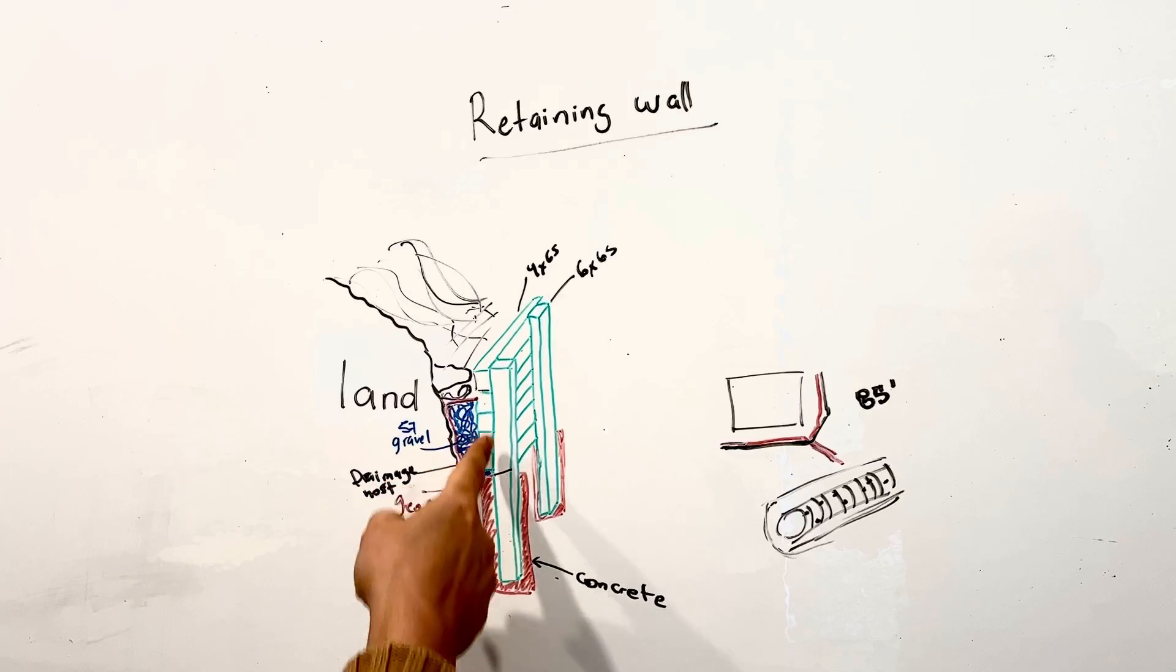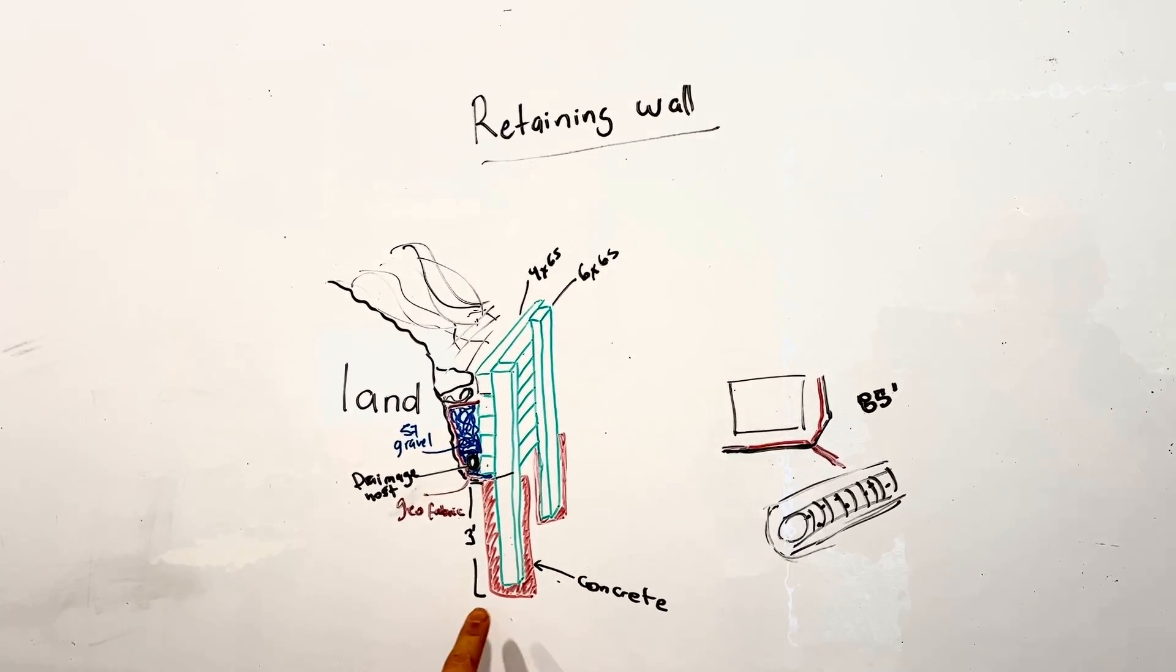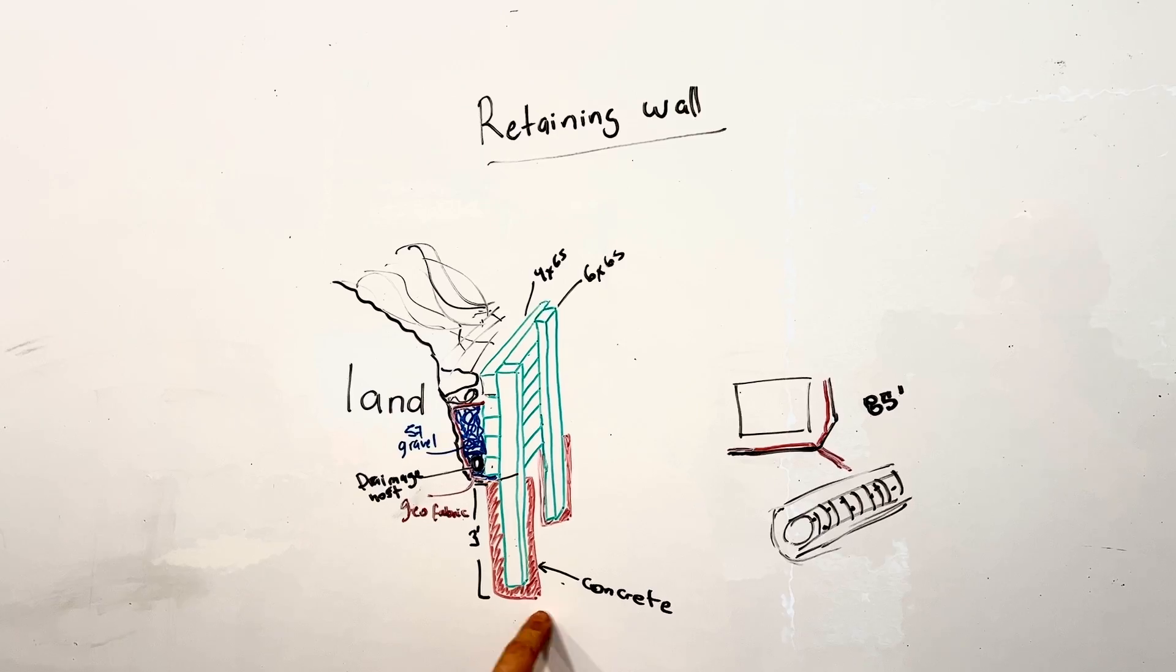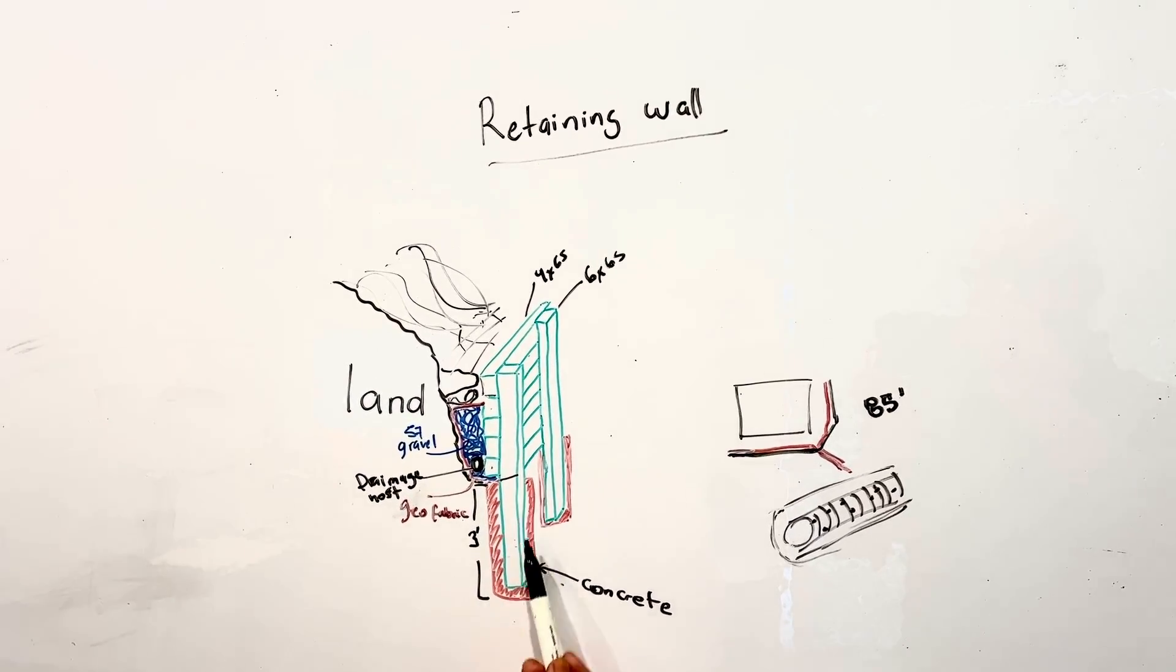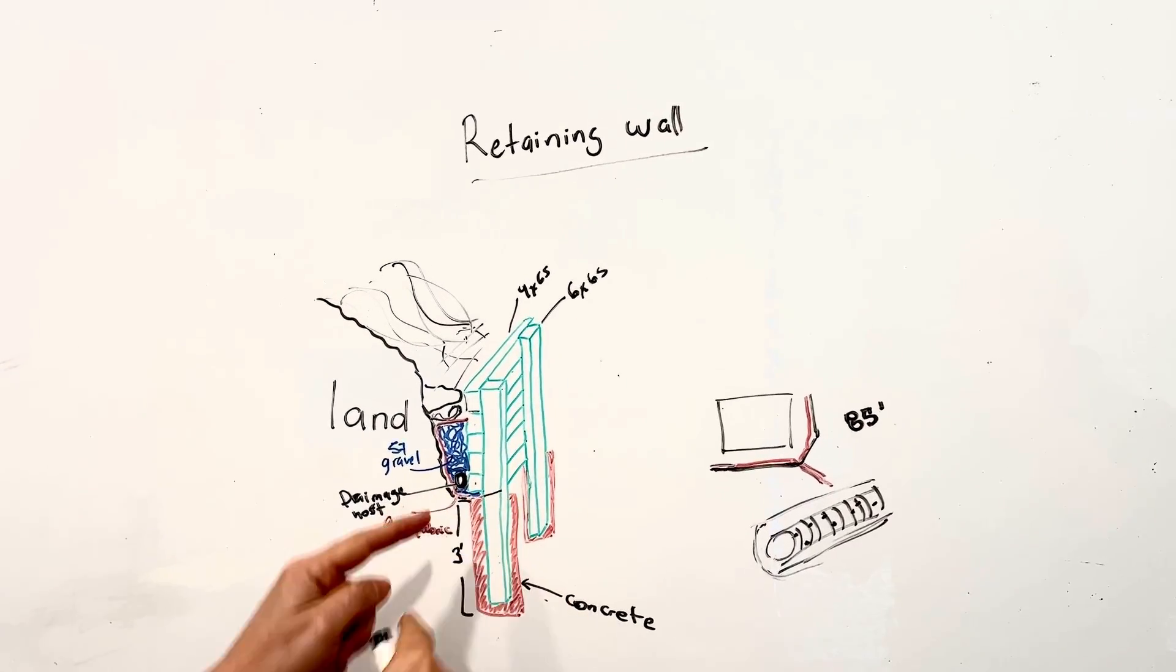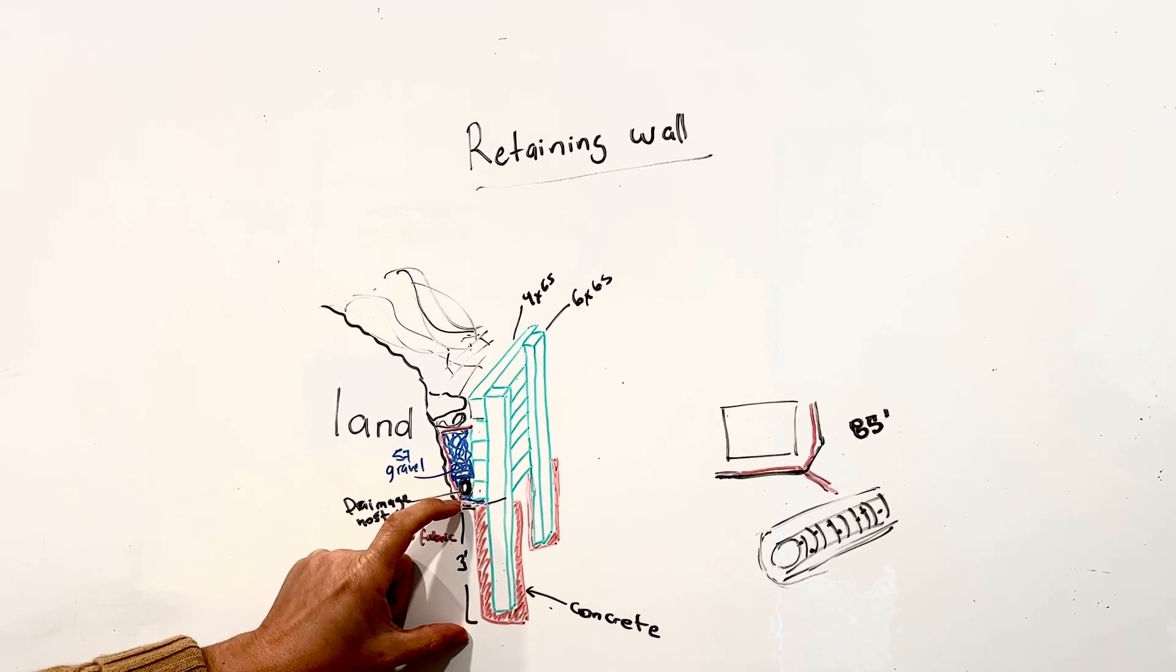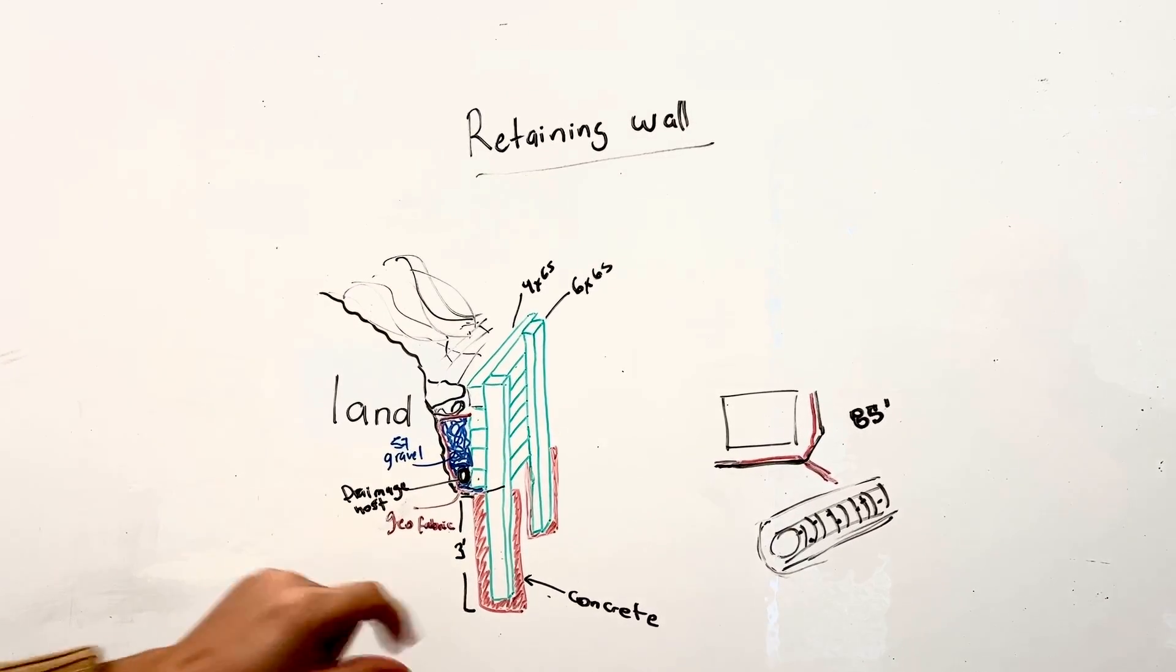Then we're going to be using these posts as six by six. What you're seeing in red is going to be concrete. We always want to have a little bit of a bedding of concrete so there's no direct contact. We're going to fill it up above. We're going to anchor them in the earth about three feet deep.